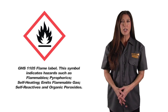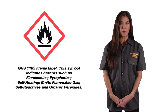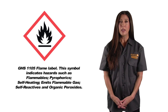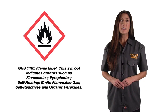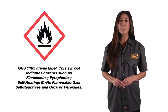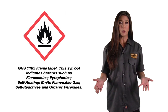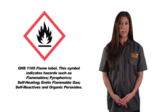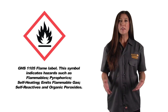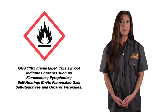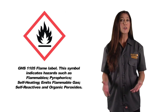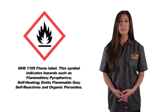Our sixth symbol is GHS 1105, flame label. This symbol indicates hazards such as flammables, pyrophorics, self-heating, emits flammable gas, self-reactives, and organic peroxides.